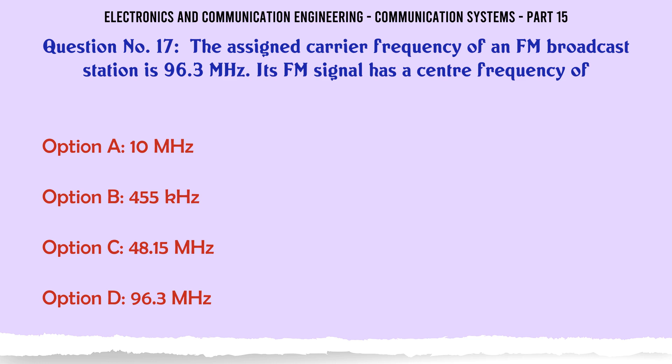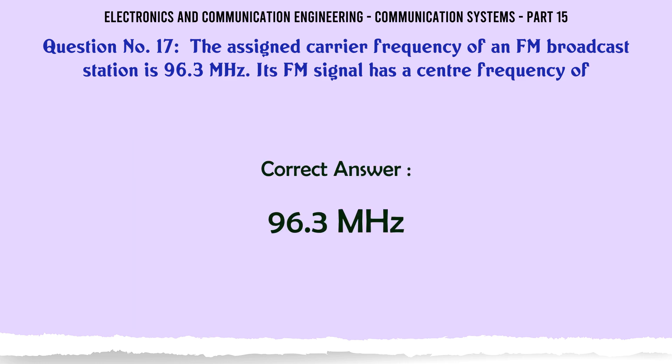The assigned carrier frequency of an FM broadcast station is 96.3 MHz. Its FM signal has a center frequency of: A 10 MHz, B 455 KHz, C 48.15 MHz, D 96.3 MHz. The correct answer is 96.3 MHz.